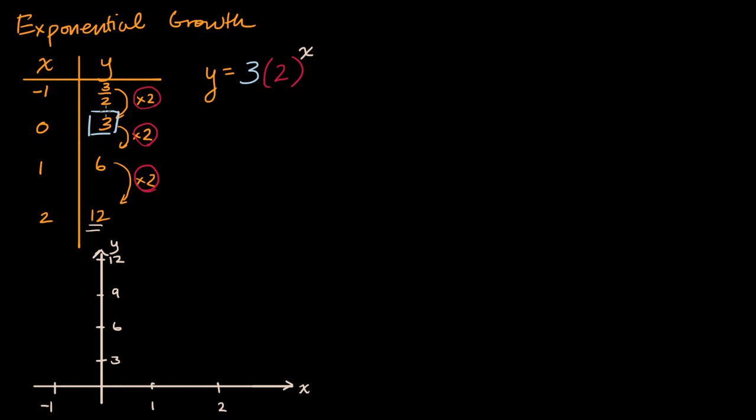When x is negative one, y is three halves. Then when x is zero, y is three. When x equals one, y has doubled. It's now at six. When x is equal to two, y is 12. And you will see this telltale curve.